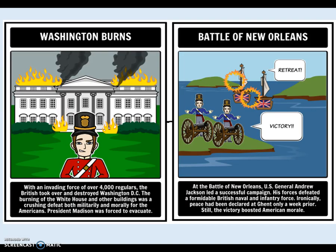The British attacked Washington, D.C. and burned the White House. They attempted to burn other buildings, including the U.S. Capitol. President James Madison was forced to evacuate. His wife, Dolly Madison, stayed behind and saved important documents and a large painting of George Washington from the White House before the British could burn it. The British then attacked Fort McHenry in Baltimore, and it was during that battle that Francis Scott Key wrote the poem 'The Star-Spangled Banner,' which eventually became our national anthem.